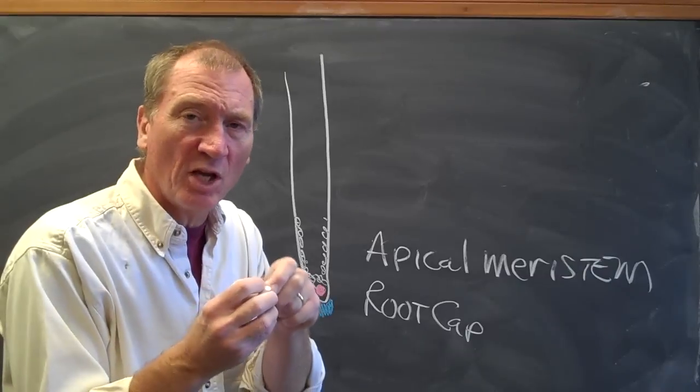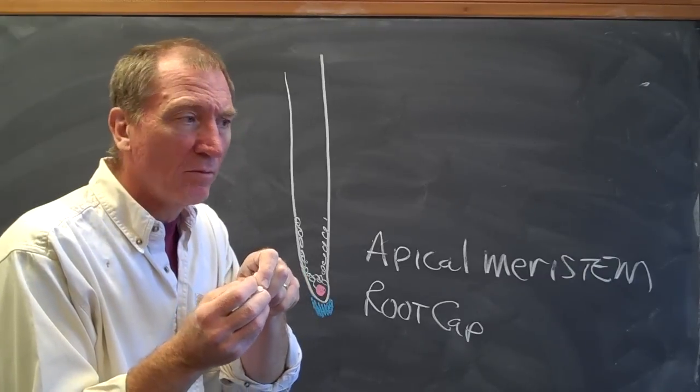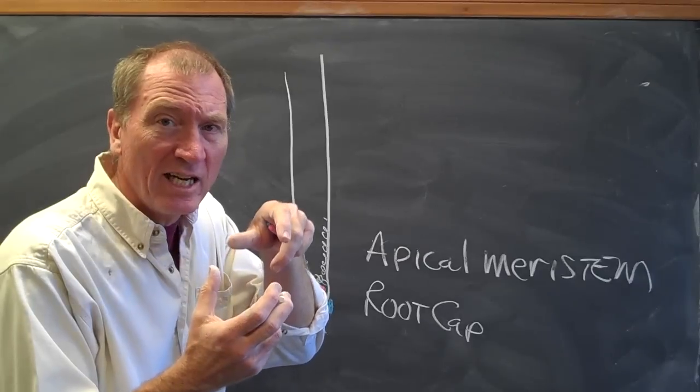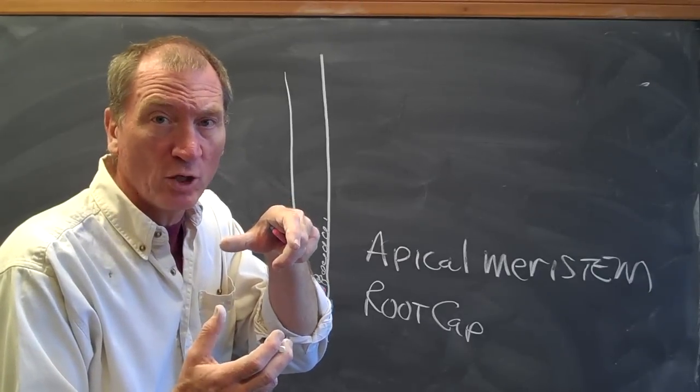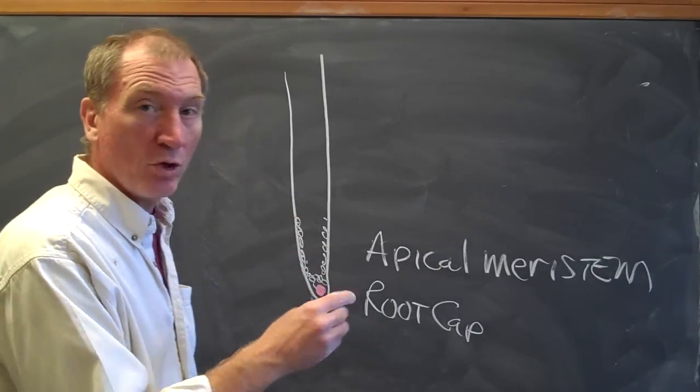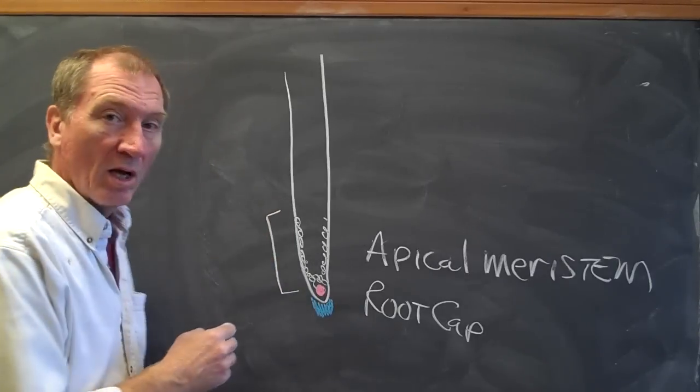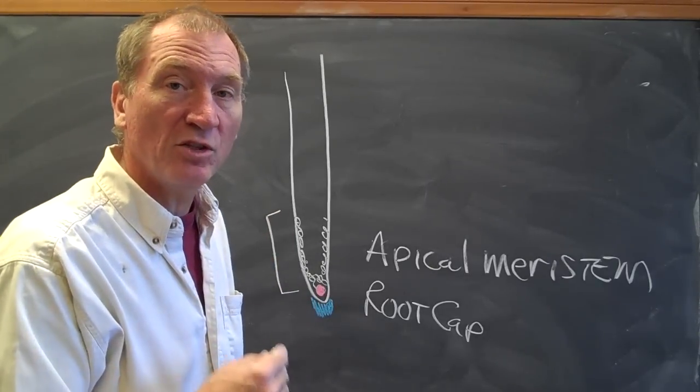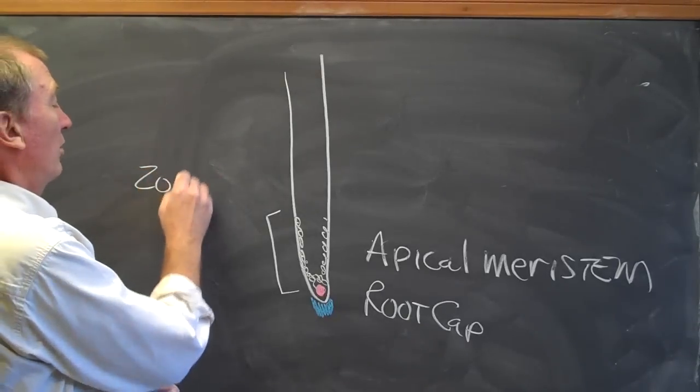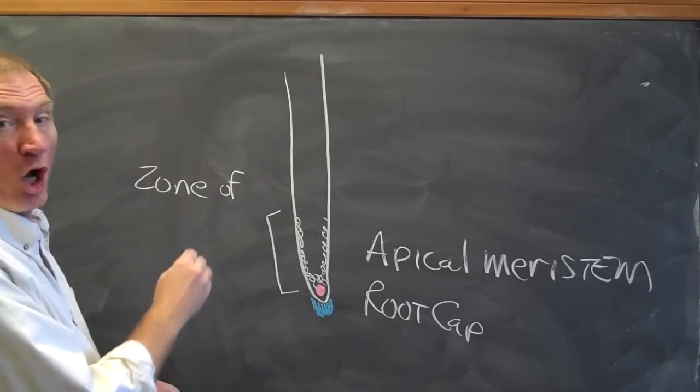They're still, after the cells are still fresh, just been produced, they're going to enlarge and elongate and make the root even longer. And so the cells in this region of the root, right behind the apical meristem, are said to be in the zone of elongation.